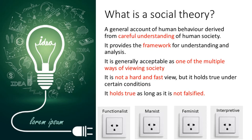What is a social theory then? In short, it is a general account of human behaviour derived from careful understanding of human society. It provides the framework for understanding and analysis. It is generally acceptable as one of the multiple ways of viewing society. It is not a hard and fast view, but it holds true under certain conditions — as long as it is not falsified. Your views will depend on which theory you plug into: if you plug into functionalist, you have a functionalist view; Marxist, a Marxist view; the same for feminist or interpretive views. There are multiple theories and your views will depend on which theory you adhere to. We do not have anything called truth — we only have multiple realities and multiple truths.